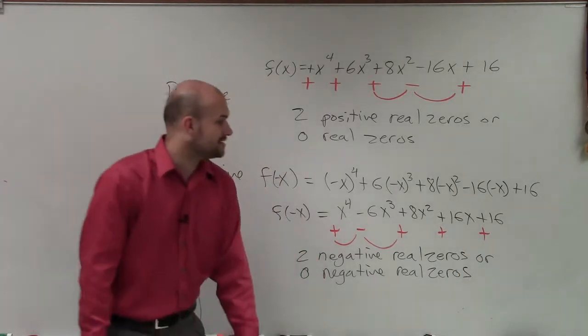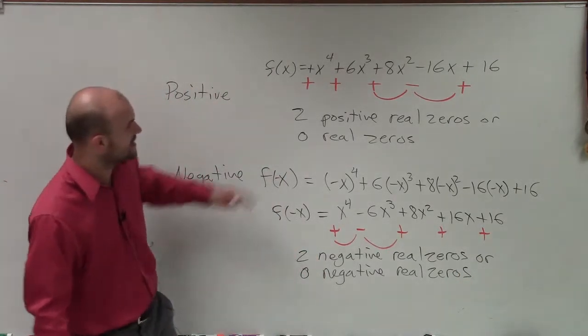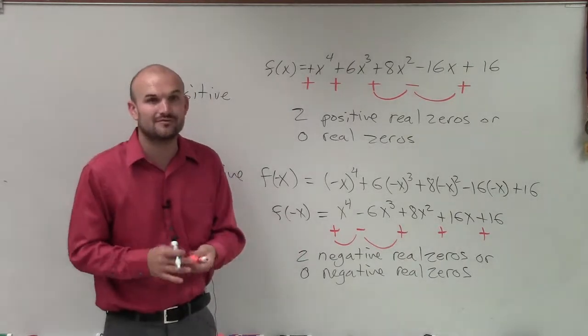And that's how you use Descartes' rule of signs to determine the number of positive and negative real zeros. Thanks.